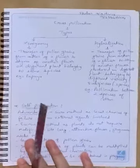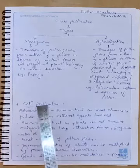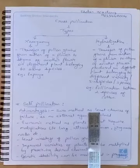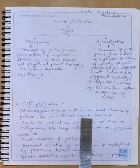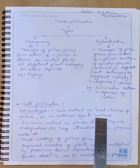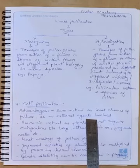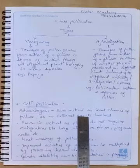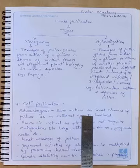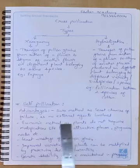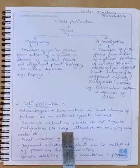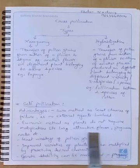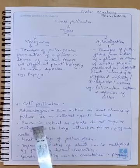Self-pollination has several advantages. First, it is a sure method, because the male and female parts are nearby, so there are least chances of failure. Second, external agents are not needed — in bisexual flowers, pollen falls onto the same stigma. Third, it is an economical method: the plant saves energy since flowers don't need to be large, attractive, fragrant, or produce nectar.